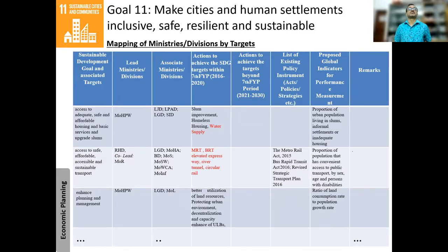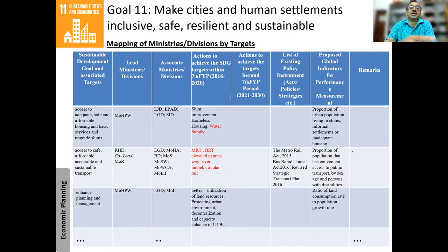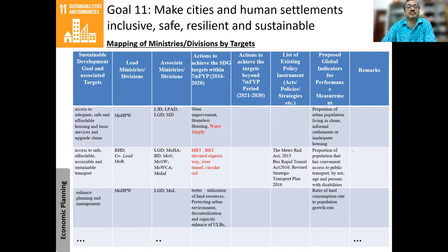This is a snapshot of the mapping of ministries for Goal 11. Access to adequate, safe, and affordable housing goes to the Ministry of Housing; they will do water supply and slum improvement. And if you look at the second row — access to safe, affordable, accessible, and sustainable transport — the listed actions are: MRT, BRT, elevated expressway, river tunnel, circular rail. All these are very, very big projects.